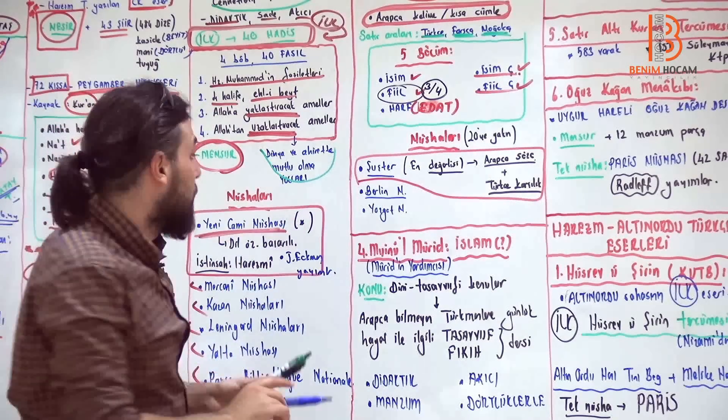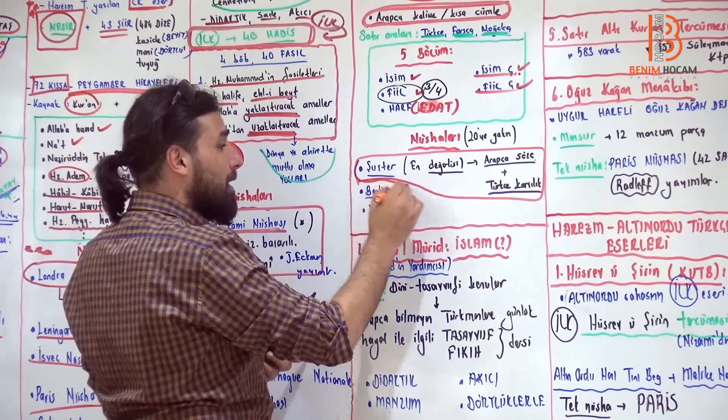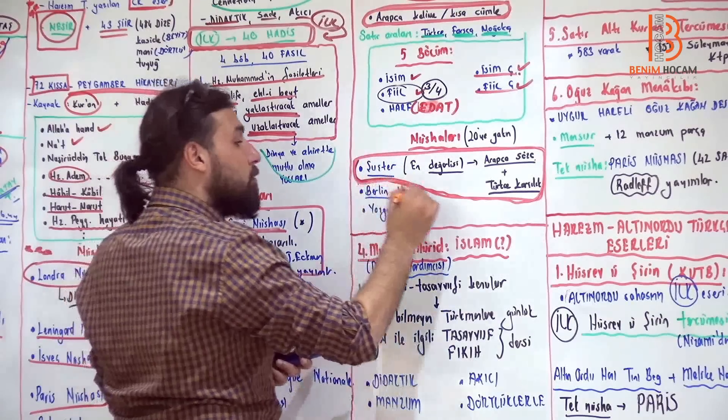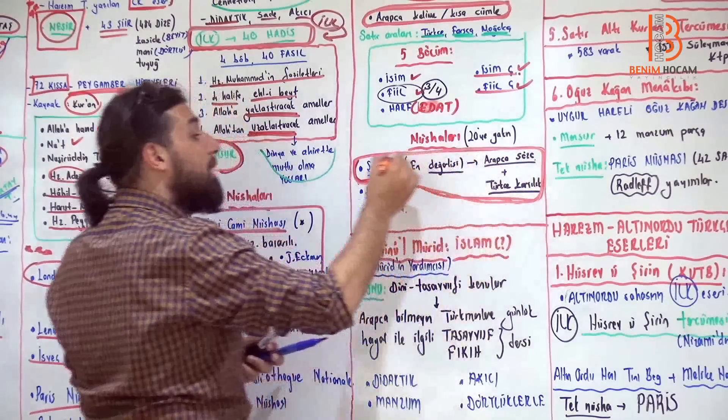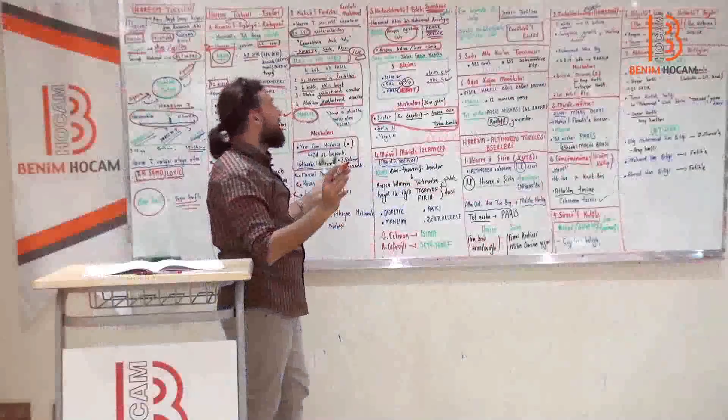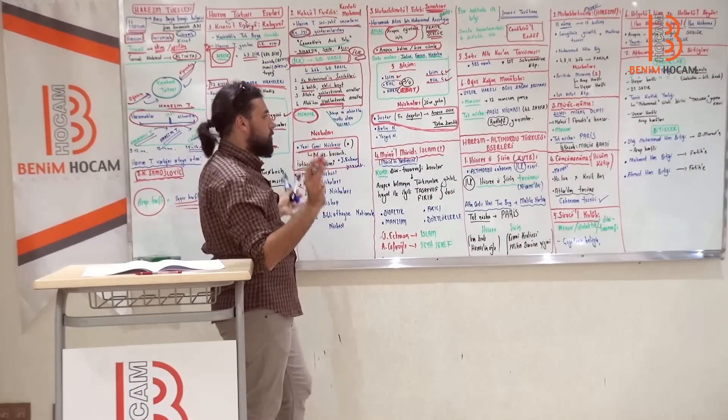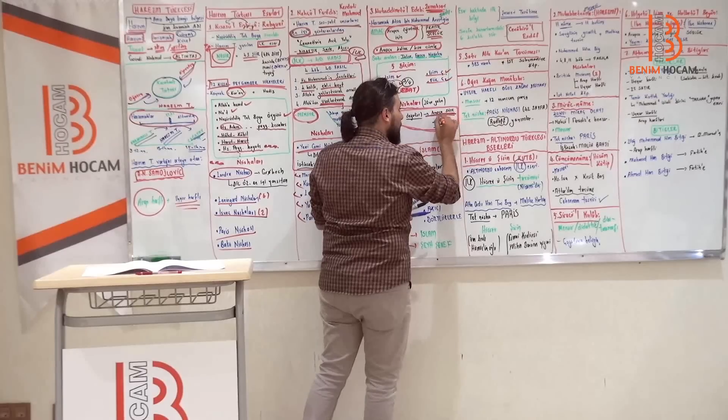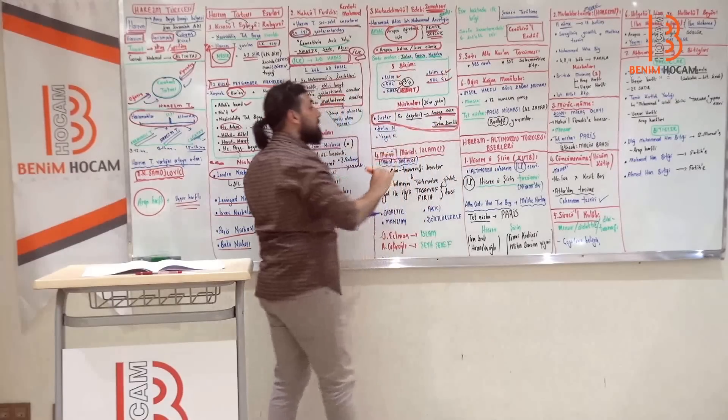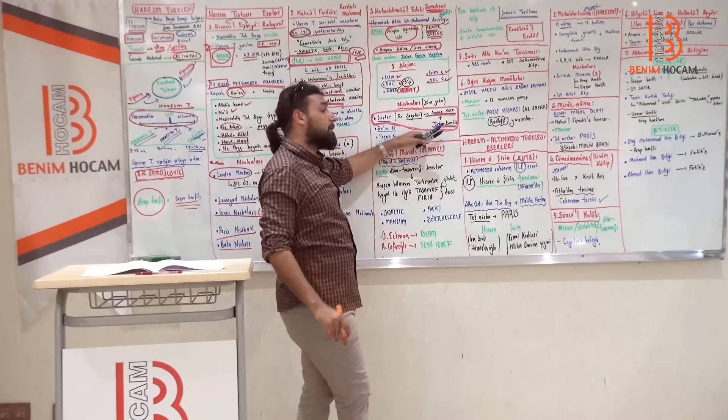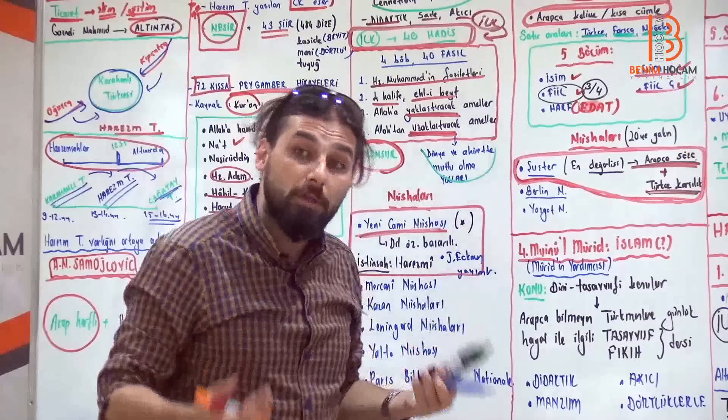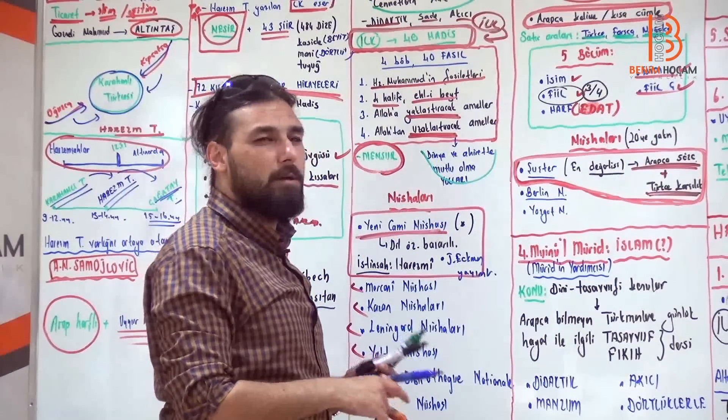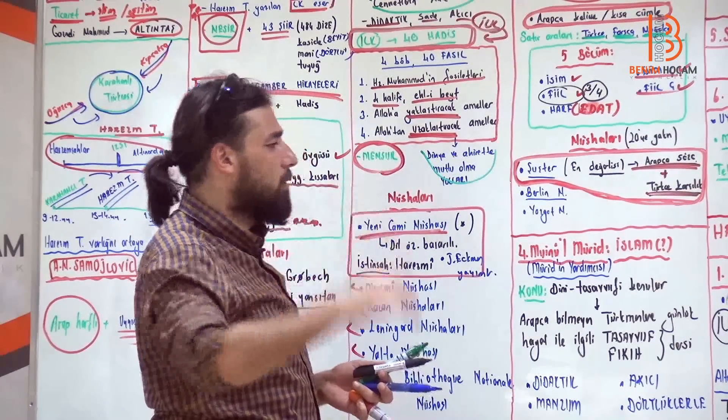Nüshaları gelince. Şuşter, Berlin, Yozgat gibi bir sürü nüshası vardır. Ama sizin bileceğiniz bu 20'ye yakın nüshadan şuşter'i bileceksiniz gençler. En değerlisi. Mukatibetül Edep'in en değerli nüshası şuşterdir. Çünkü nedir? Arapça sözcükler verilmiştir. Hemen altında Türkçe karşılıkları vardır. O Türkçe karşılıkları bizim açımızdan değerlidir. Çünkü Orta Türkçedir. Yani Harezm Türkçesi özelliklerini gösterir. Demek ki 20'ye yakın nüshası var. En iyi nüshası hangisiymiş? Şuşter.